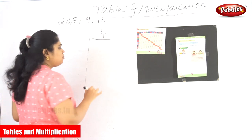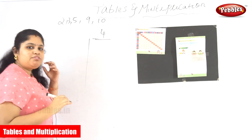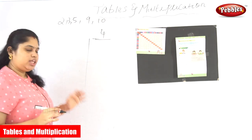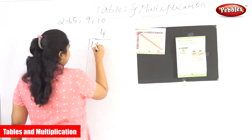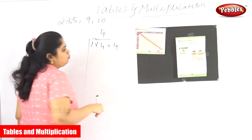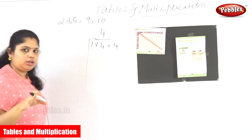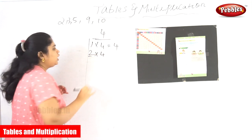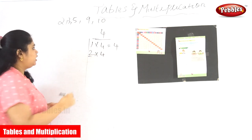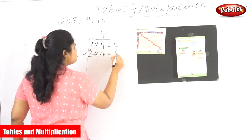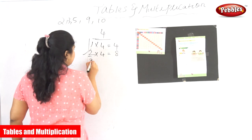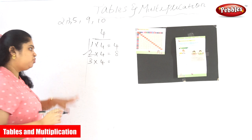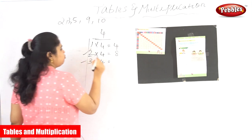When it comes to the 4 table, it will be very easy. Why? See here: 1 into 4 is equal to 4 — you can put it automatically. For 2 into 4, we have already read the 2 tables, so 2 into 4 is 8. For 3 into 4, already we have read it in the 3 table — 3 into 4 is 12.